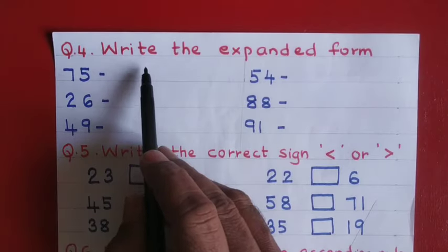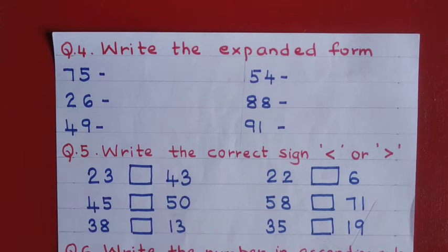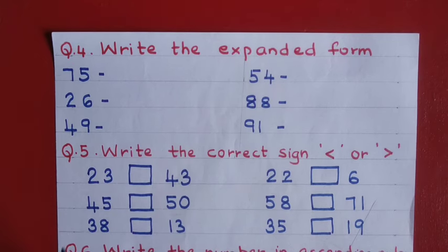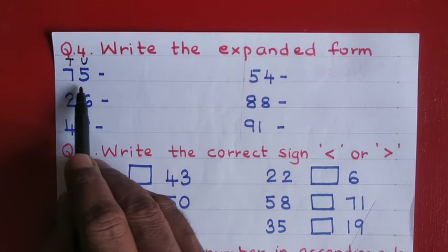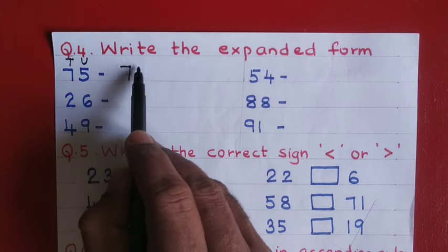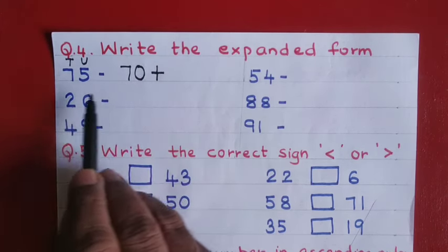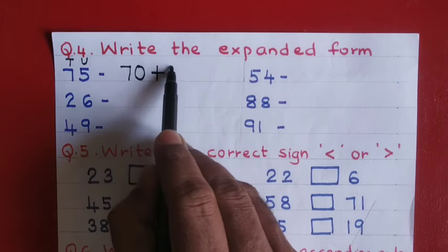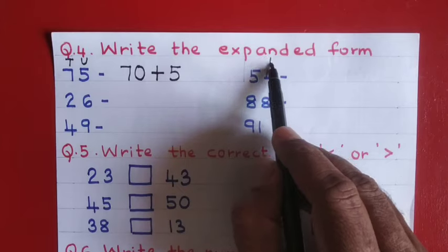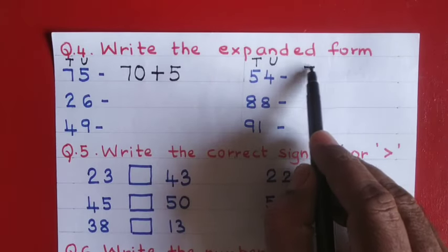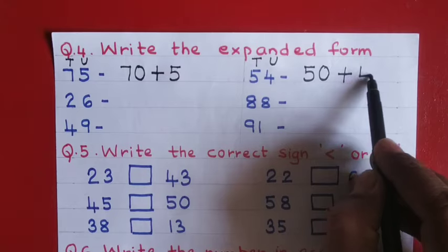Question number four: write the expanded form. A number is given and you have to write its expanded form. Write the place values to help you. Seventy five — by reading you can tell it is seventy and five. In expanded form we use the plus sign: seventy plus five. Fifty four: fifty, then plus four. Fifty four.